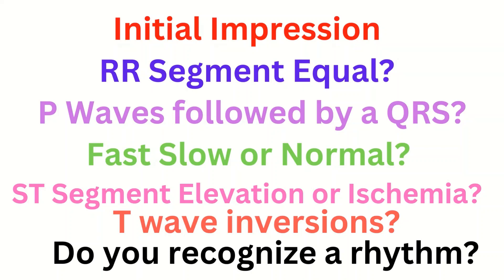As a new ER nurse, you don't have to be a pro, but you need to at least be able to recognize certain rhythms, when ischemia is occurring, and whether there are changes to the ECG — so that someone with more experience and qualifications, your provider, can read the ECG and make a care decision. Your provider has the authority and the final say in making the official reading, but you need to be able to recognize what normal sinus rhythm looks like, what ischemia looks like, and what certain rhythms look like, so that you can get your provider to the ECG faster and the patient gets the care they need without delay.